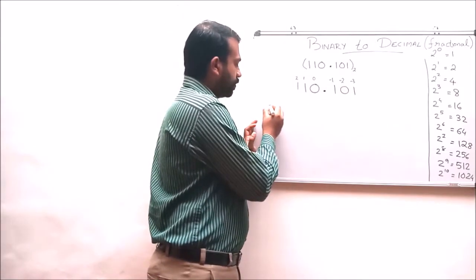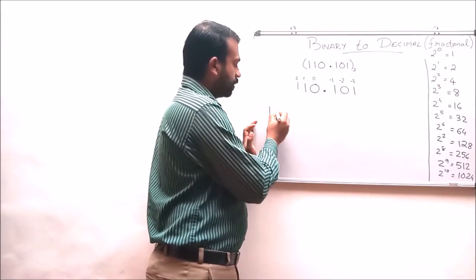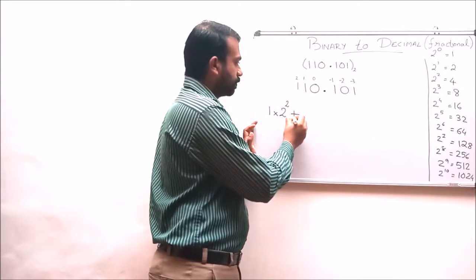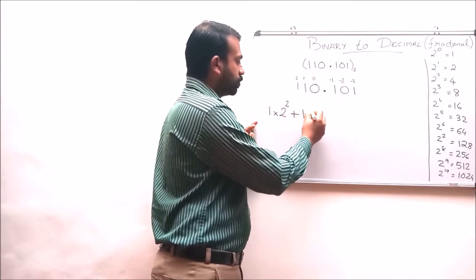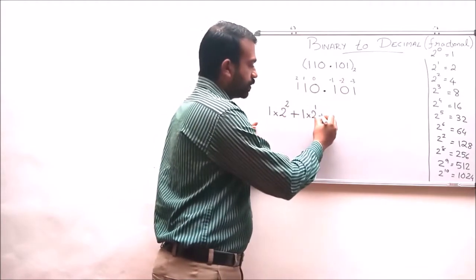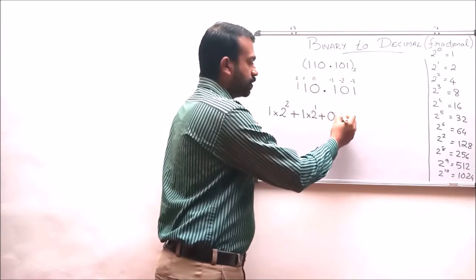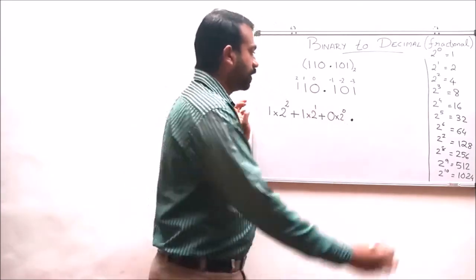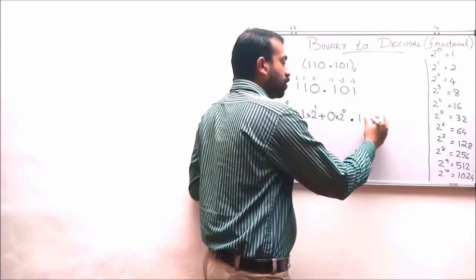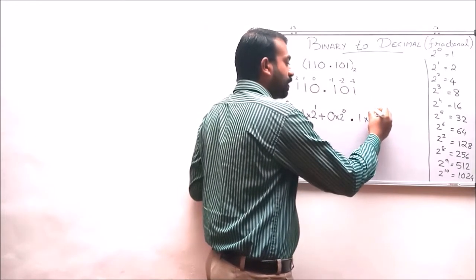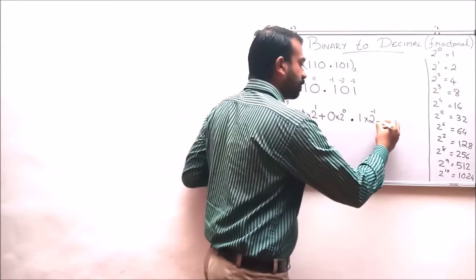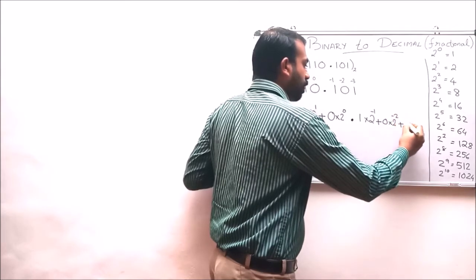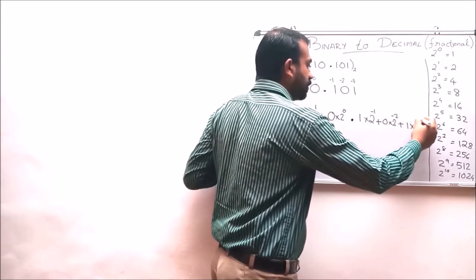So in this example, we start: 1 is multiplied with 2 raised to 2, plus 1 into 2 raised to 1, plus 0 into 2 raised to 0. Then we add the decimal point, and next: 1 into 2 raised to minus 1, plus 0 into 2 raised to minus 2, plus 1 into 2 raised to minus 3.